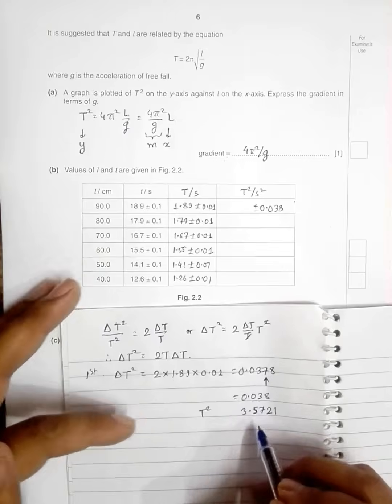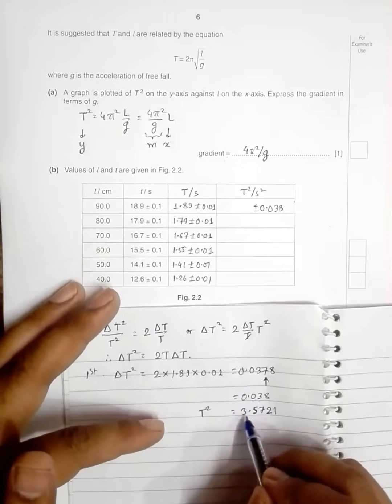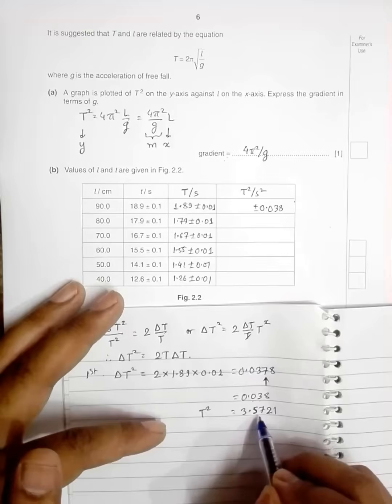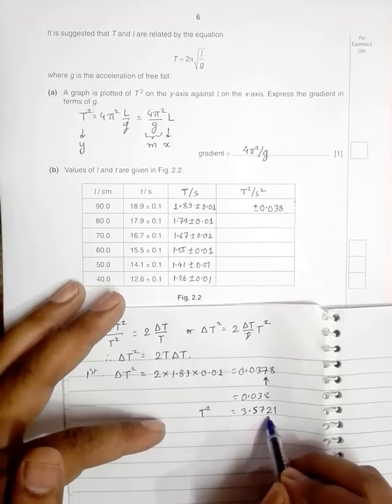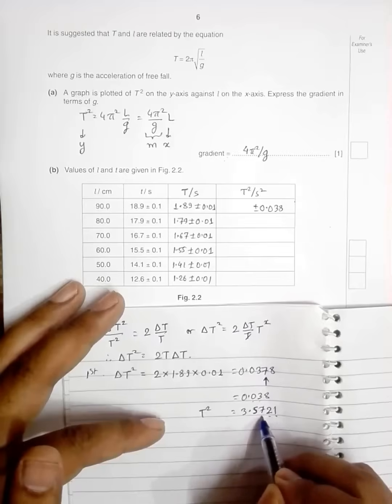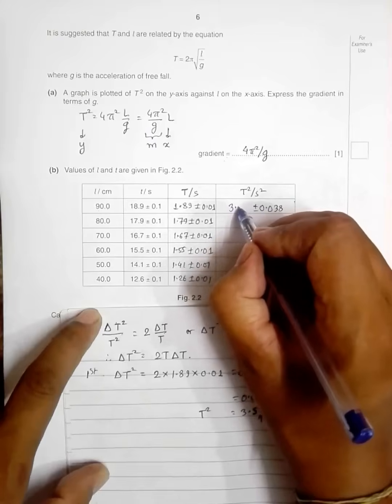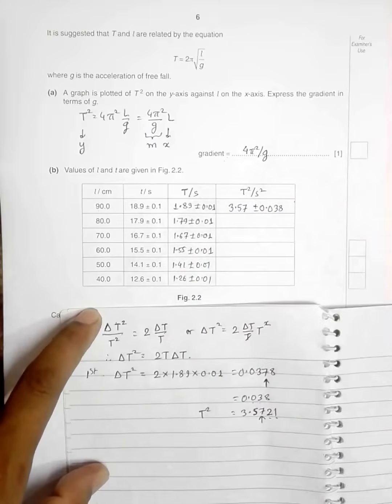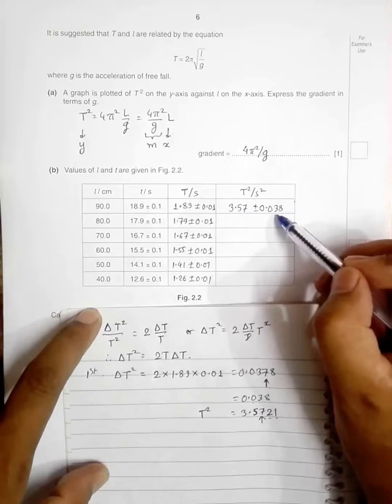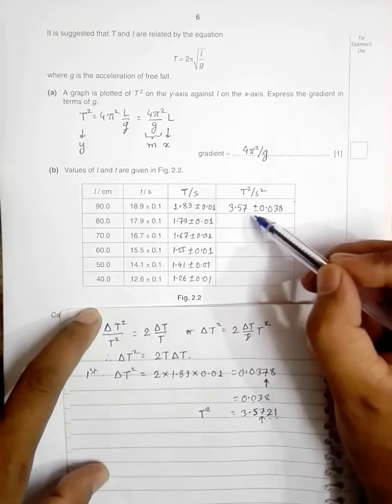So where should I write up to? I must write up to that quantity. Let's see, the error has started from the second place after decimal. If I look from here, the error has started from the second place after decimal. So let's look here, we have to write only up to the second place of decimal.